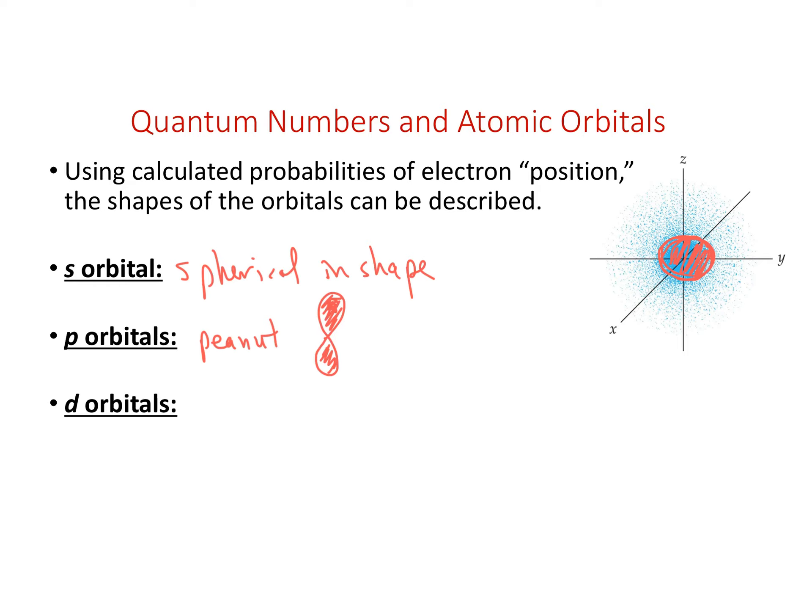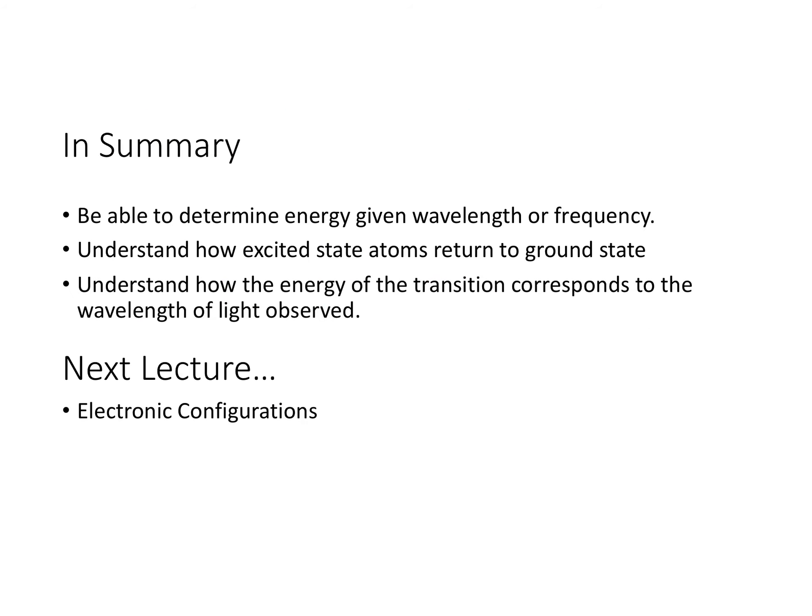We'll talk about D and F orbitals briefly as well. The important thing is that the shapes of the S, P, D, and F orbitals give us a 90% probability of where to find that electron — I cannot say it's exactly in this orbit, but I can define a region in space represented by these orbital shapes. Key takeaways from today: determine energy given wavelength or frequency, understand electron excitation to a higher energy state, and how an electron relaxes back to the ground state by releasing a photon of light. Next we'll cover chapter 7 and electron configurations.